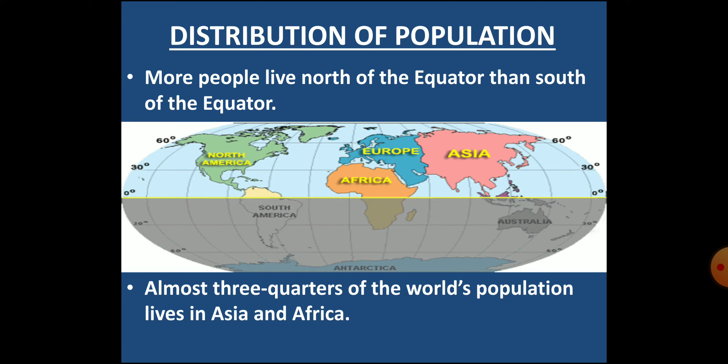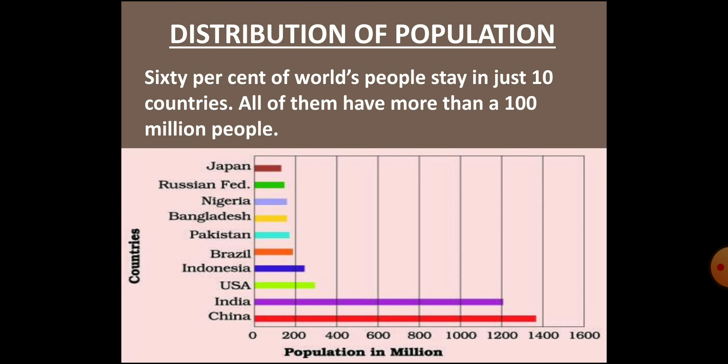Another fact about population distribution is that more people live north of the equator, in the northern hemisphere, than in the southern hemisphere. Almost three-fourths of the world's population is concentrated in only two continents: Asia and Africa. About 60 percent of the world's people live in just 10 countries with more than 100 million people each. More than one-third of the world's population lives in India and China.